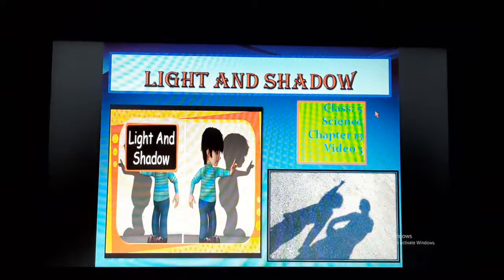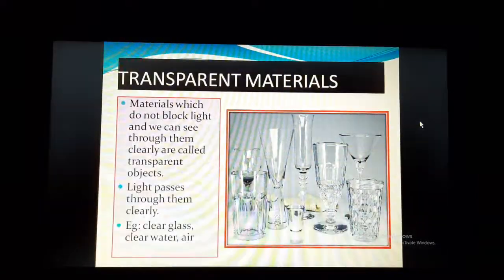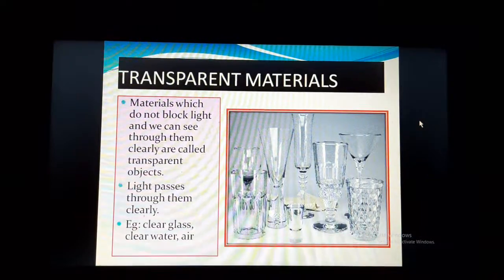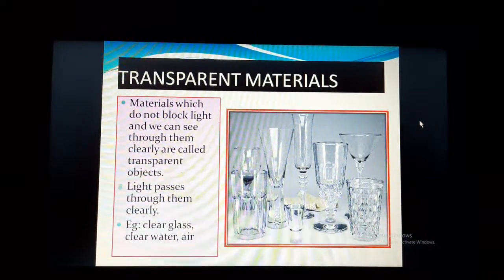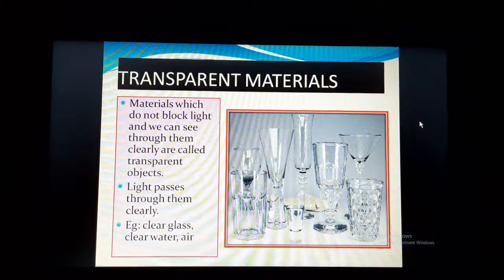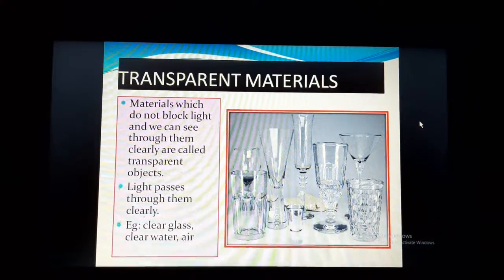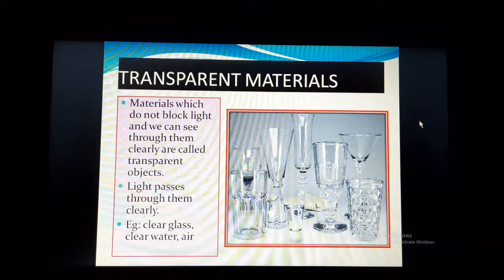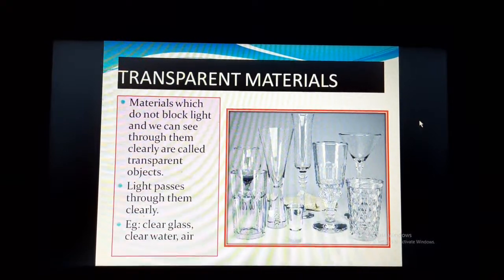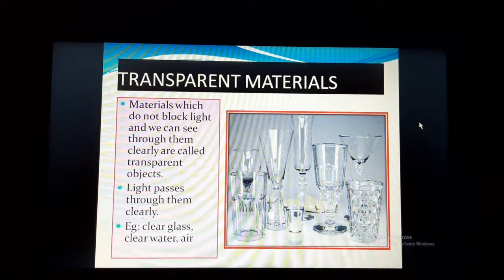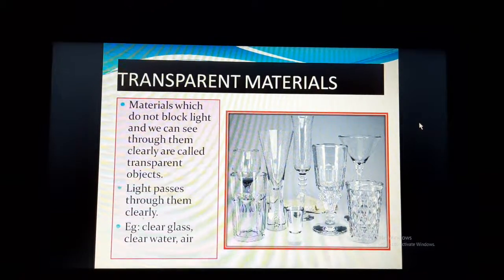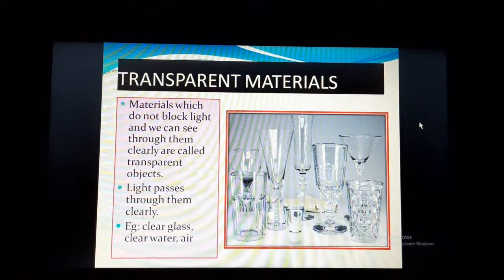Today we will learn in detail about them. Transparent objects — materials which do not block light and through which we can see clearly — are called transparent objects. You have to go through this definition nicely, as it may come in an exam as 'define transparent objects or transparent materials.' Light passes through them clearly, and that is why we can also see through them clearly.